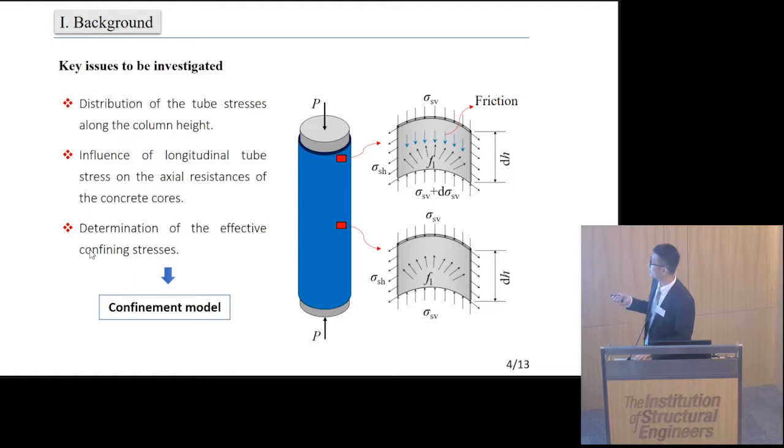But with the accumulation of the frictional stress, the slip may be overcome and the steel tube at mid-height region may deform accordingly with the concrete column. Therefore, the tube stresses vary in each section along the column height.